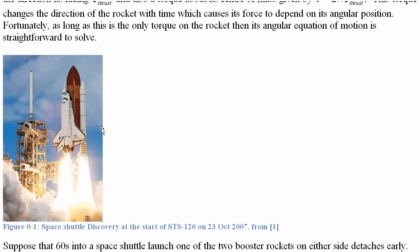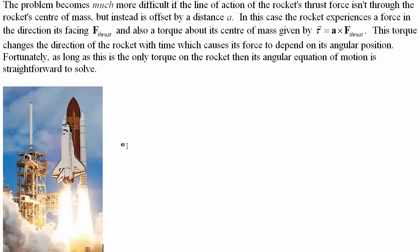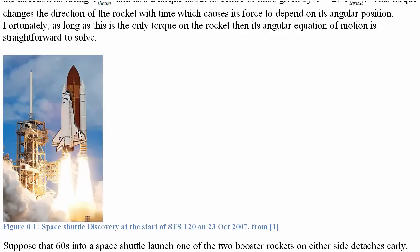What makes this problem so difficult: first, the booster rocket's mass is changing, so the system center of mass location is changing. Both effects mean the moment of inertia about the center of mass is also changing. Because the booster is misaligned with the center of mass, a torque acts on the combination over time, producing angular acceleration that changes the angle. That angle then determines the direction of the net force, so the translational equation of motion depends on the result of the rotational equation.